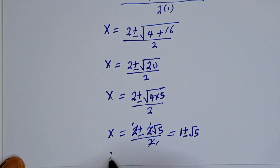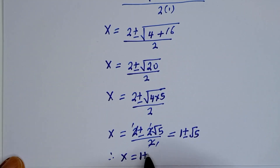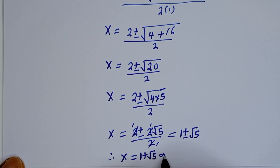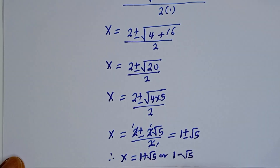Therefore, our final answer is x is equal to 1 plus root 5, or x is equal to 1 minus root 5. This is the final answer.